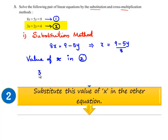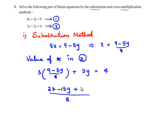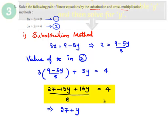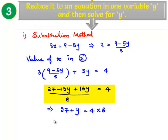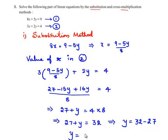We get 3 times of (9 minus 5y divided by 8) plus 2y is equal to 4. This gives 27 minus 15y, and taking LCM as 8, plus 16y is equal to 4. So we get 27 minus 15y plus 16y, and 8 goes to the right-hand side, becoming 4 multiplied by 8. So we get 27 plus y is equal to 32, which implies y is equal to 32 minus 27, therefore y is equal to 5.